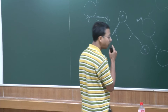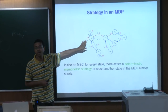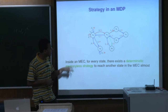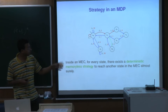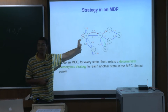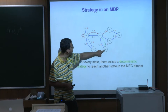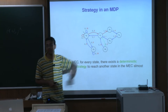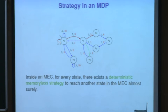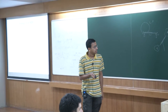Inside a maximal end component, there exists a deterministic memoryless strategy to reach any other state of the MEC almost surely. For example, from S0 you can reach S6 by a deterministic memoryless strategy. So if you are inside a maximal end component, you can reach any other state within it by a deterministic memoryless strategy.